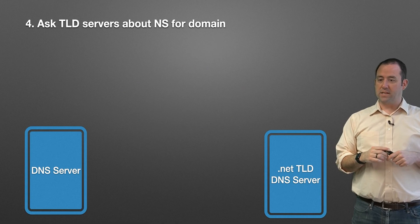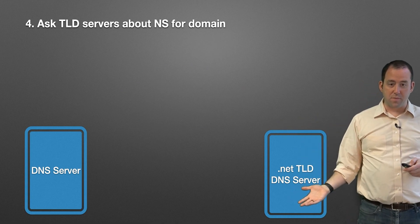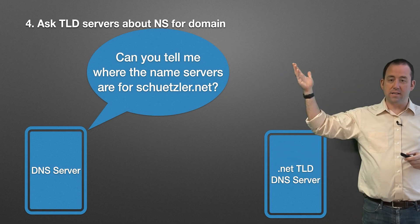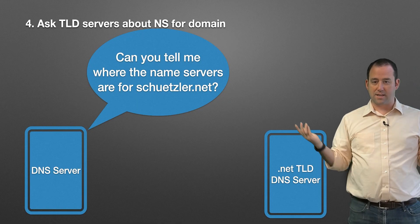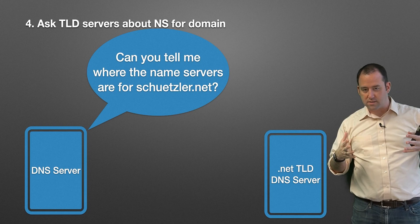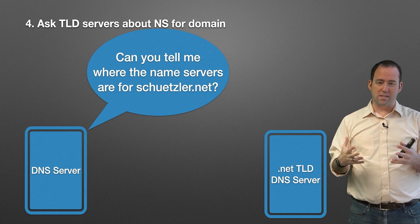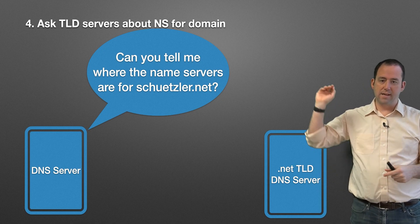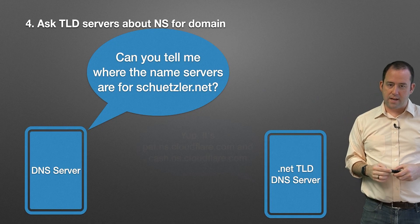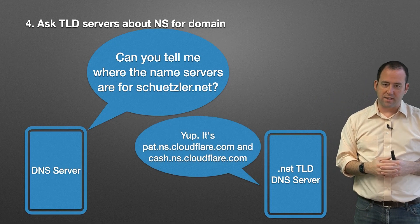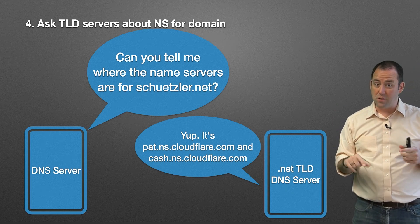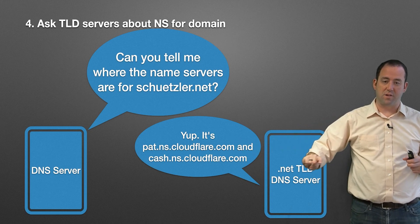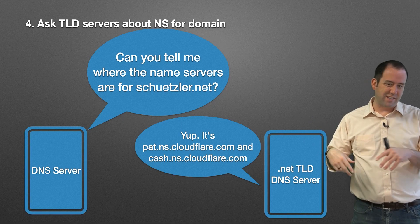Now the DNS server talks to the .NET top level domain DNS servers. Our DNS server asks the .NET TLD DNS server: can you tell me where the name servers are for schetzler.net? Who's in charge of schetzler.net? And when you pay to register a domain, this is what you're paying for — you are paying the .NET top level domain DNS server to record who's in charge of your servers. The .NET TLD DNS server responds: it's pat.ns.cloudflare.com and cache.ns.cloudflare.com. We can assume we already know where those are — they're stored in our DNS cache because we've looked them up before.